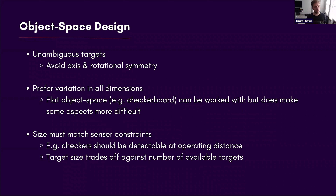On that same note, prefer variation in all dimensions. Flat object spaces like a flat checkerboard can be worked with, but they do make some aspects more difficult. As one commenter noted, stop using chessboard targets if possible — though for some folks that's a constraint because they're cheap and easily available. Also, size and movement must match sensor constraints: checkers must be detectable at operating distance, and target size trades off against the number of available targets. More checkers give more observed points, but make them harder to observe as we step farther back — and this matters a lot when trying to get cross coverage or overlap between multiple sensors.